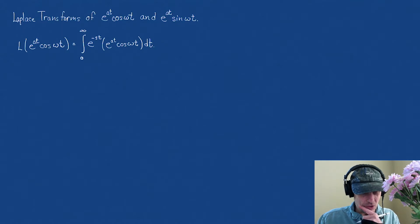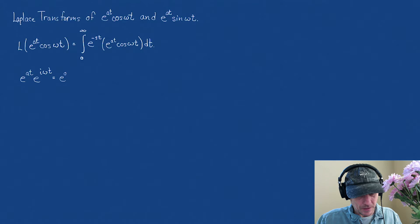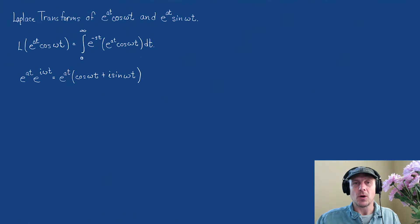So I think what I'm going to do — I was looking at this and notice that if I write something like e to the at times e to the i omega t, we can also expand that. And if I expand that, that's e to the at times cosine omega t plus i sine of omega t. We're just applying Euler's identity.